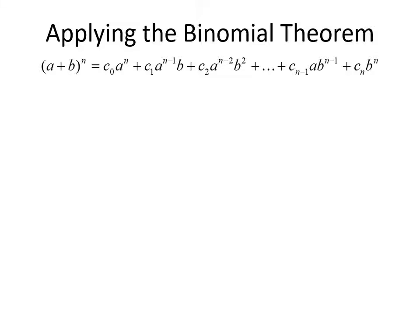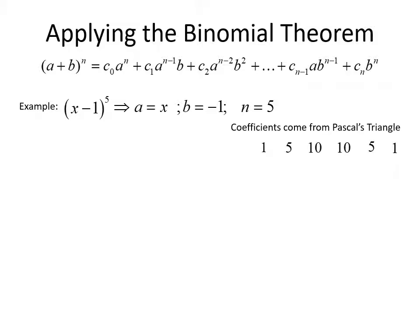The way I like to explain this is to create a table. Let's look at the example (x − 1) to the fifth power. Our n is equal to 5, our a value is equal to x, and b is going to be negative 1. Since n equals 5, we need to use the row from Pascal's triangle that has 5 as the second entry for our coefficients. That row is: 1, 5, 10, 10, 5, 1.